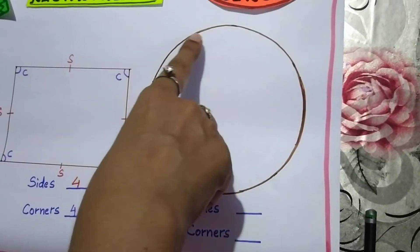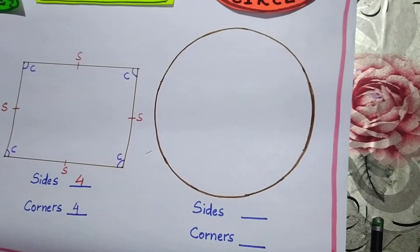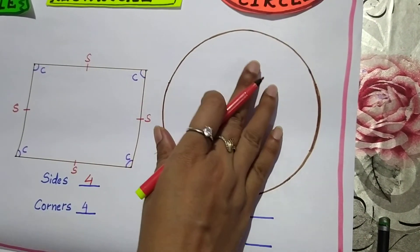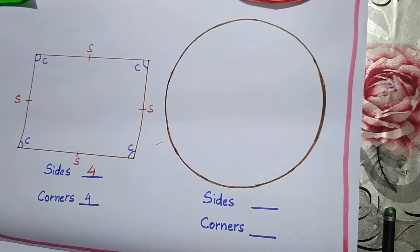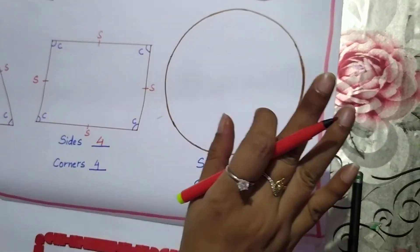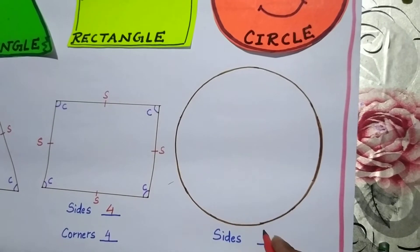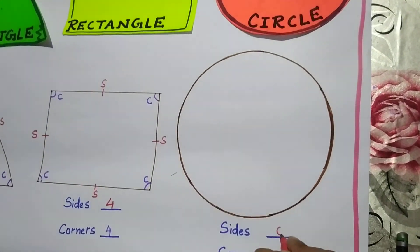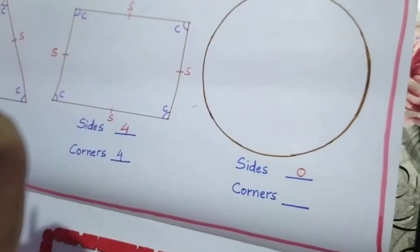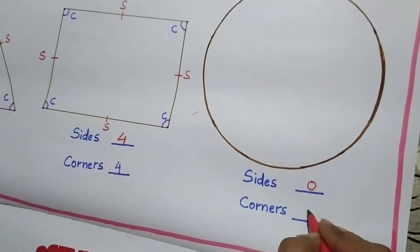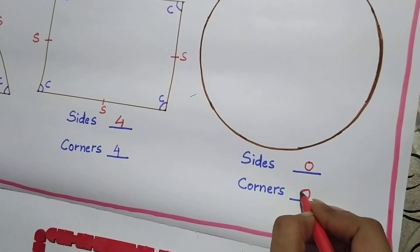Circle is actually one curved line. So how will we tell the number of sides or number of corners of a circle? A circle doesn't have any side or any corner. It doesn't have a single straight line. That's why number of sides will be zero. And if there is no straight line, then how will the corner be formed? That's why number of corners is also zero.